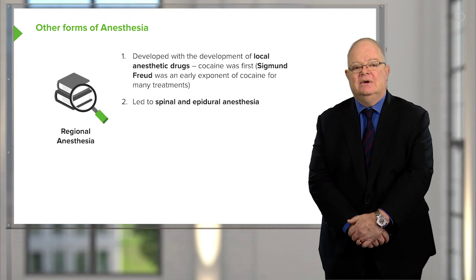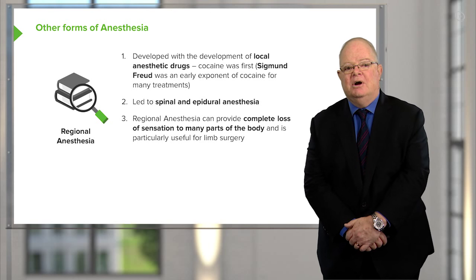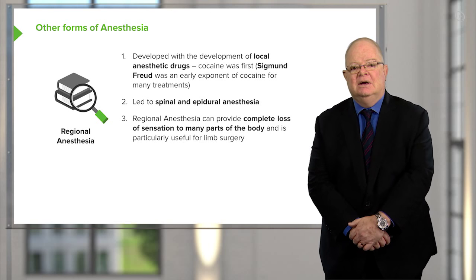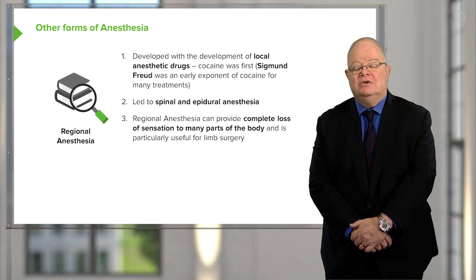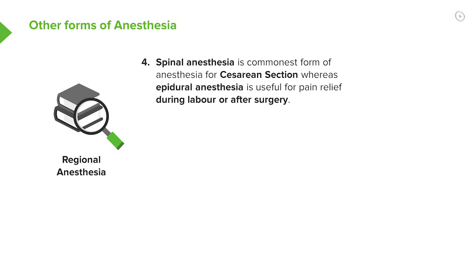We can now provide complete loss of sensation to many parts of the body, and particularly the limbs, for surgery. Spinal anesthesia is the commonest form of anesthesia for cesarean sections, whereas epidural anesthesia is useful for pain relief during labor or after certain types of surgery. Spinal anesthesia is also often used for surgery of the legs.